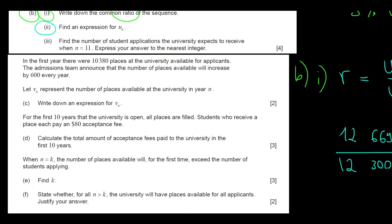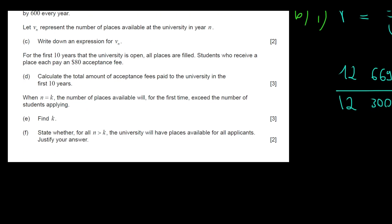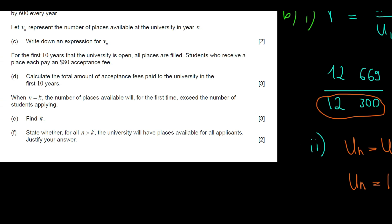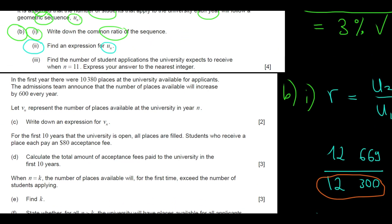Second question from B. Find an expression for UN. Okay. So, since we have a geometric sequence, the formula, the general formula, is UN equals to U1 times the common ratio to the power N-1. In this case, we will have UN equals to the first term, which was 12,300, multiplied with a common ratio of 1.03 to the power N-1. So we got that out of the way.